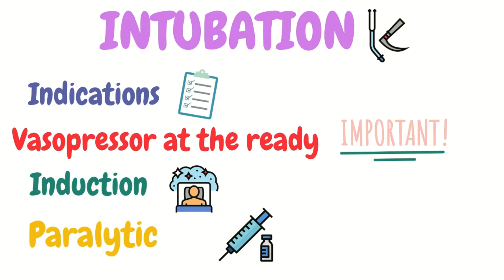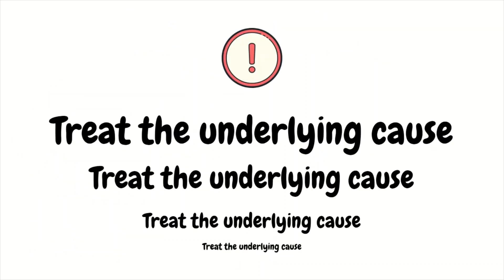Regarding the paralytic: succinylcholine can lead to hyperkalemia and rhabdomyolysis, and if the patient has been seizing for a long time, the risk can be greater. With ROC, on the other hand, it can mask the seizure due to how long it lasts — meaning even though the patient is no longer having seizure-like activity outwardly, they can still be internally seizing while paralyzed. Different providers may approach this differently: some may use only propofol without a paralytic for intubation, some may use a small dose of ROC so it wears off faster, and some still prefer succinylcholine since it doesn't last as long.